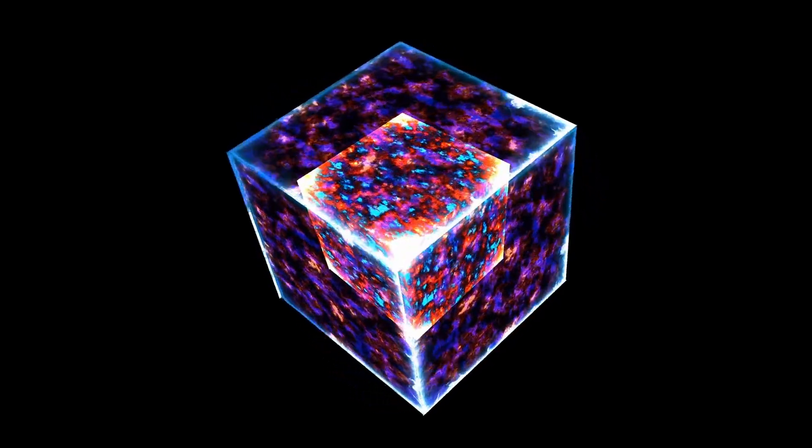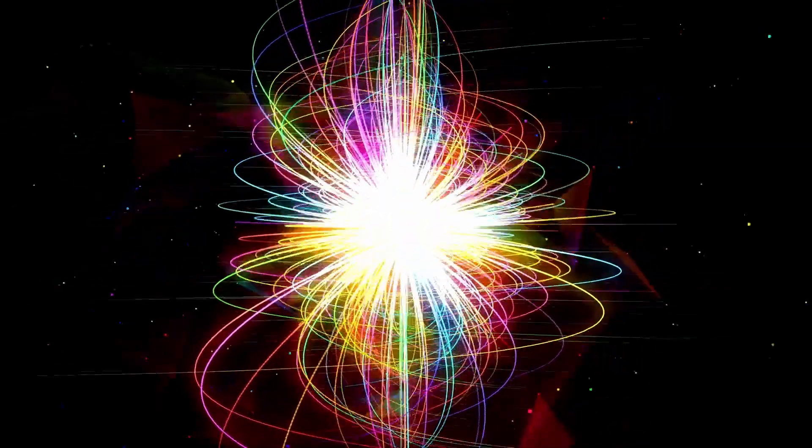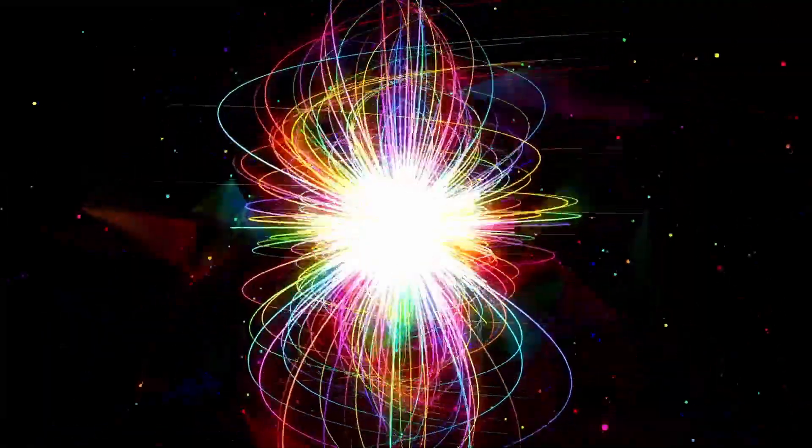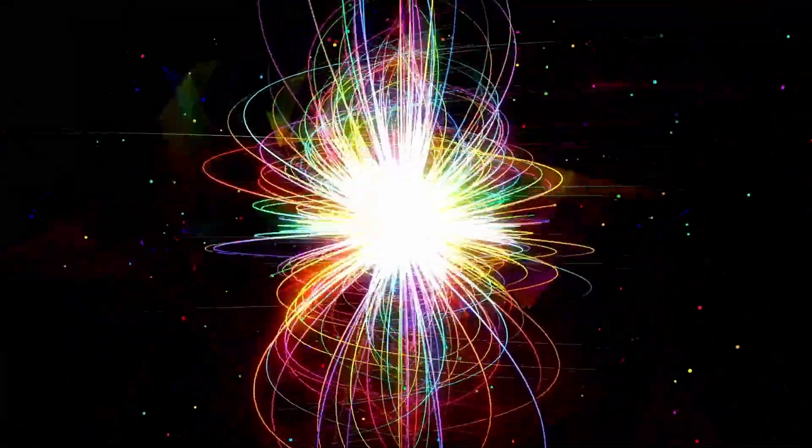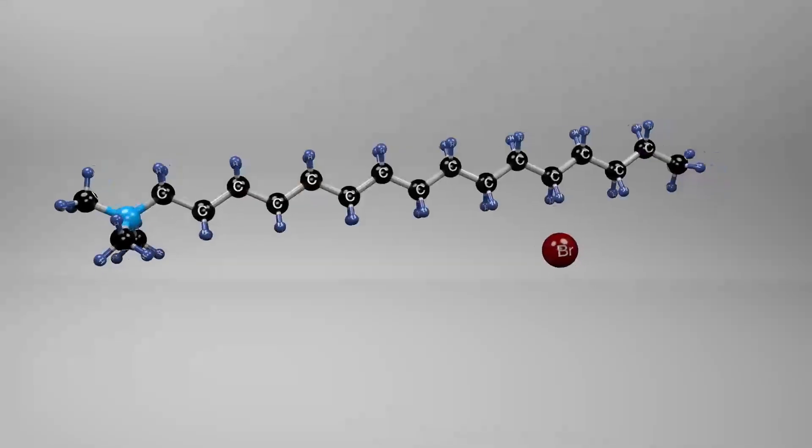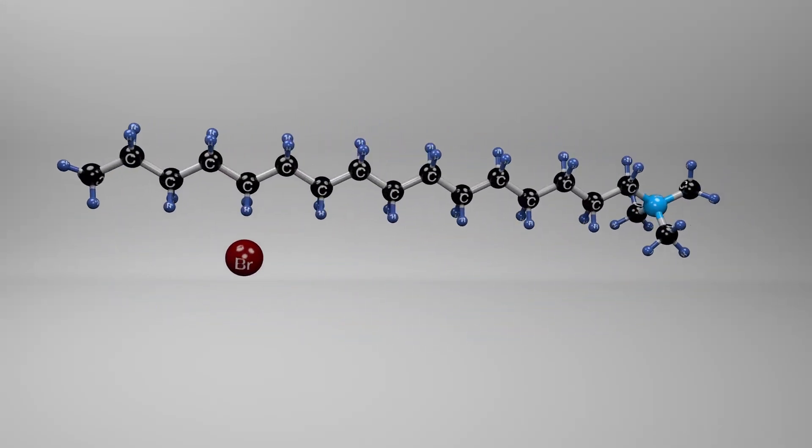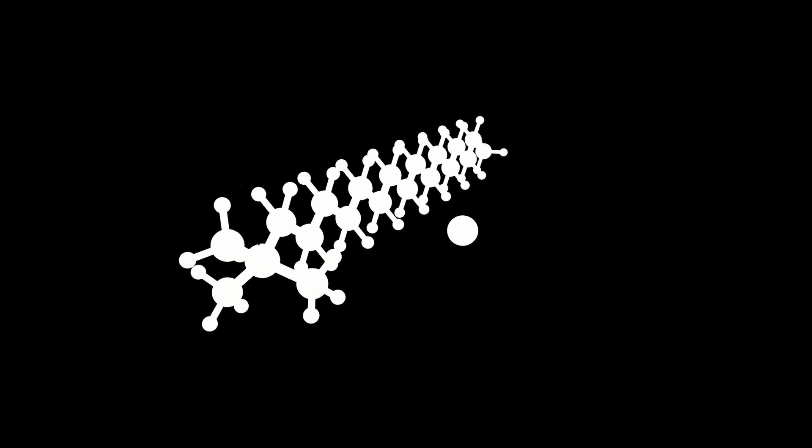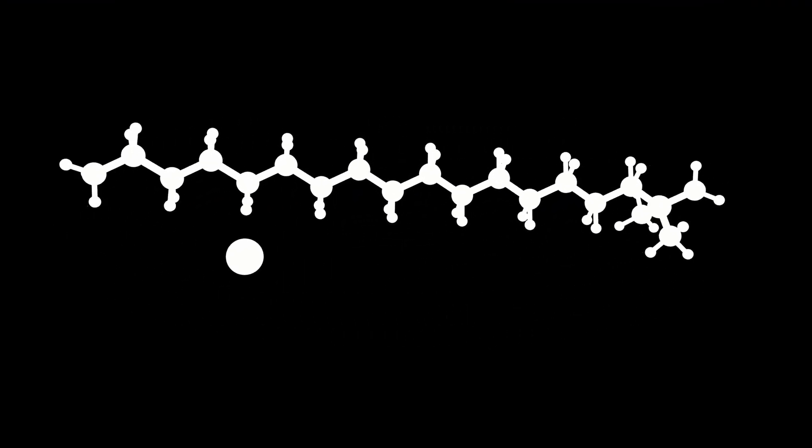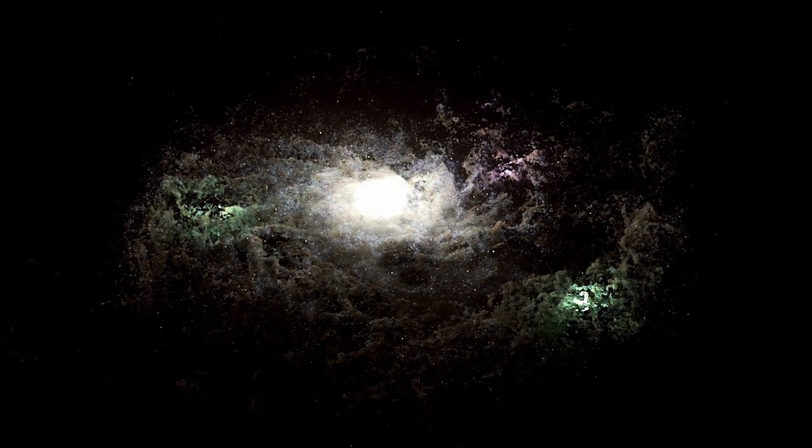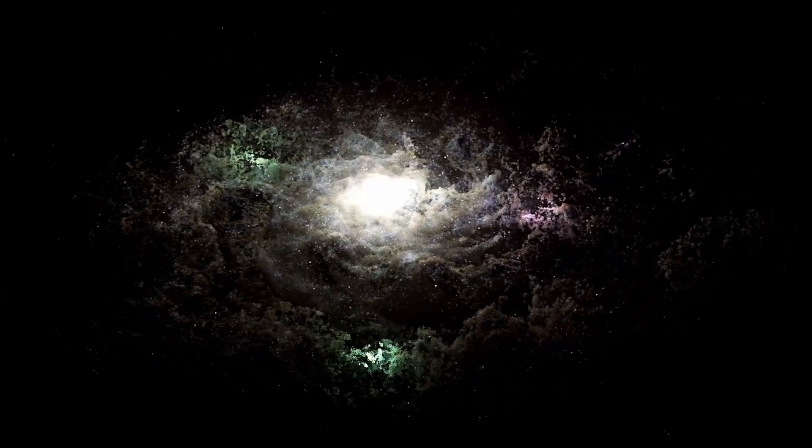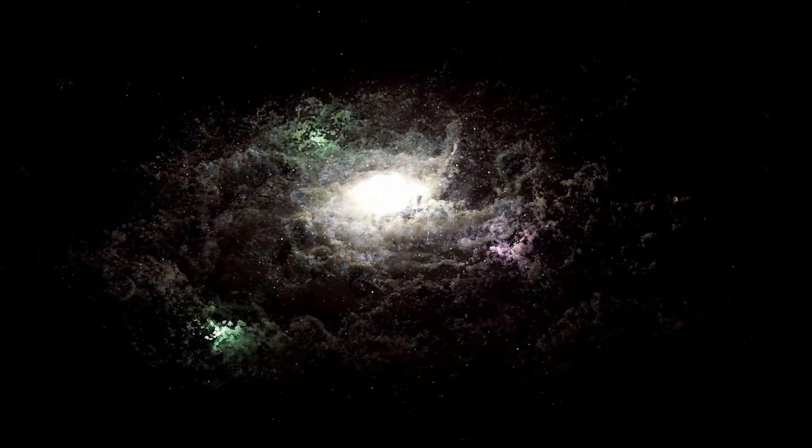As 3ATLAS continued inward, it started to behave erratically. The predictable brightening began to stutter. It would flare up, then dim just as quickly. Its color and shape shifted, like a performer who couldn't decide on their act. This kind of inconsistency is a red flag for comet specialists. It suggests structural instability, a sign that the object might not survive the increasing heat and gravitational stress of the inner solar system. Then came the betrayal.